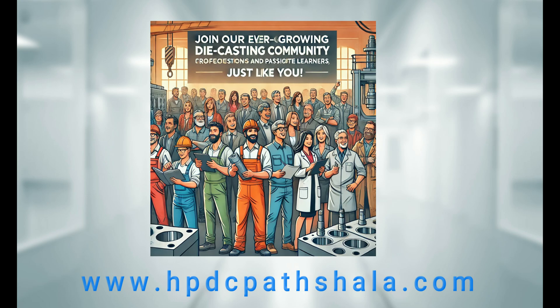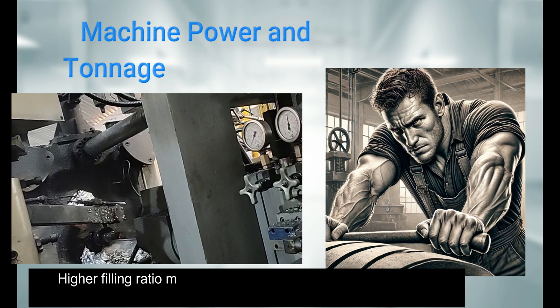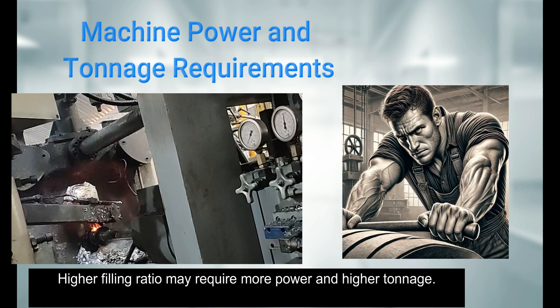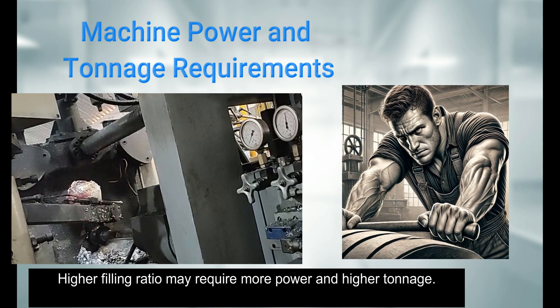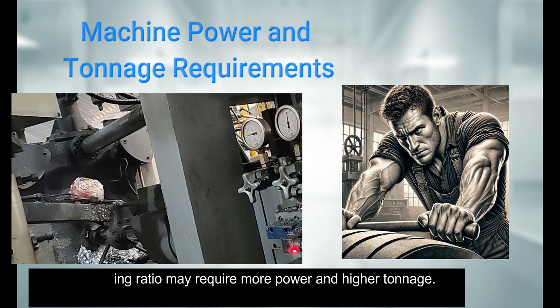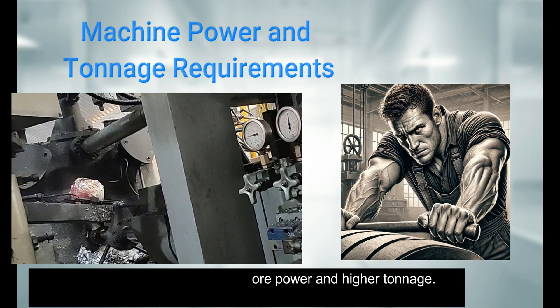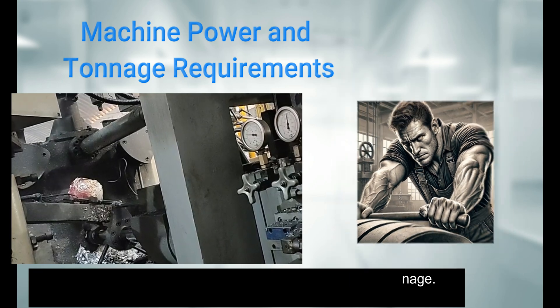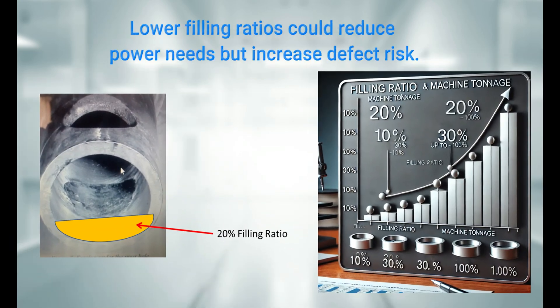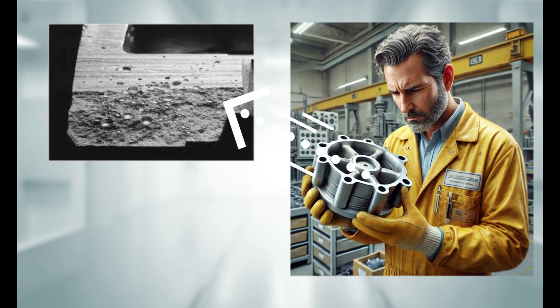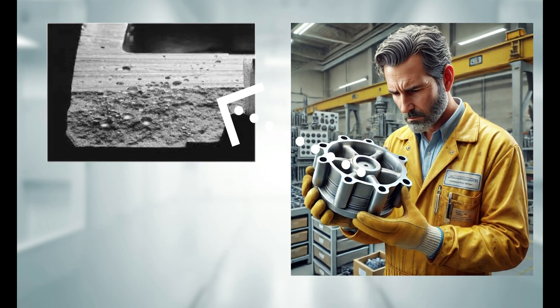A higher filling ratio generally requires more machine power to push the molten metal into the mold quickly and efficiently. Conversely, a lower filling ratio means less power, but it could also compromise the quality of metal flow and lead to defects.